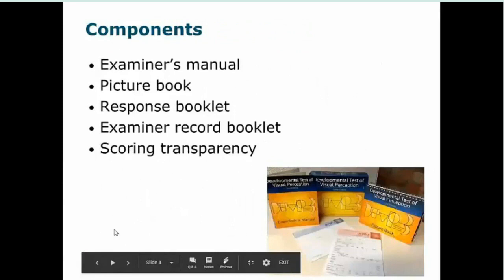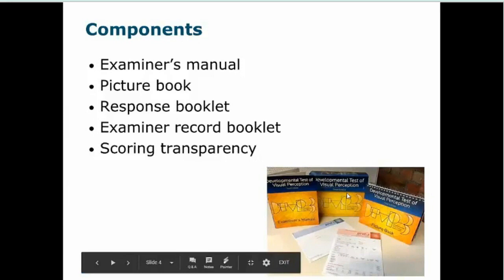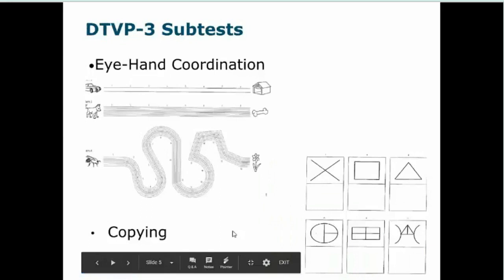The components of the DTVP3 include the manual, the picture book with all the stimuli the child looks at, a response booklet where the child draws, the examiner record booklet, and a scoring transparency used for copying and eye-hand coordination tasks. It all comes packaged in a box — quite nice, but there's no handle, so I put mine in a bag. Just a little tip there.